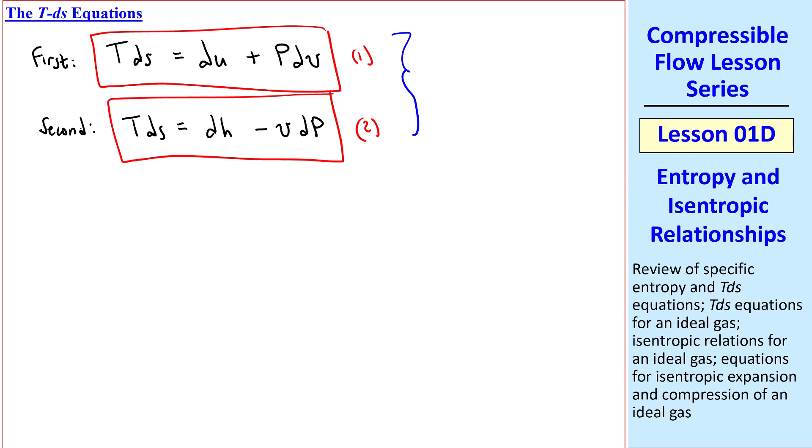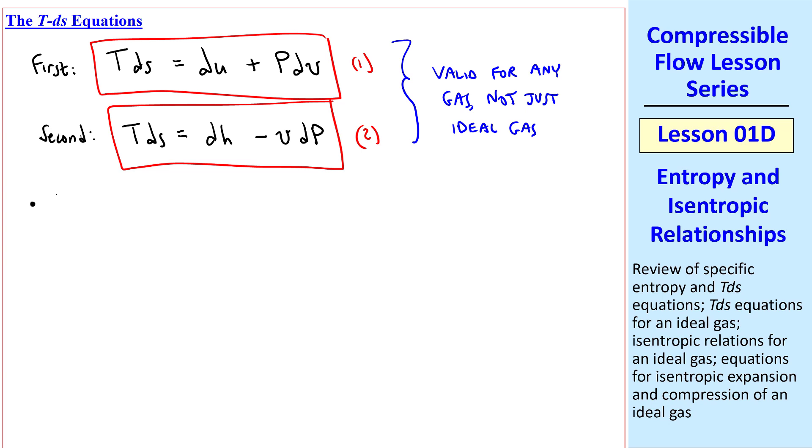Note that these equations are valid for any gas, not just ideal gas. But we're restricting our discussion in this course to ideal gases. From a previous lesson, we know that dh equals cp dt, du equals cv dt, and pv equal rt is the ideal gas law. So let's apply these to our two TDS equations.